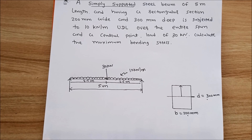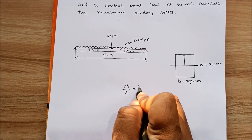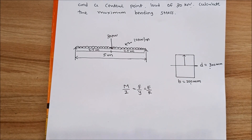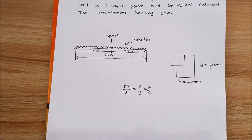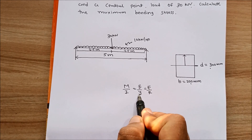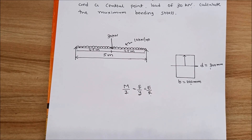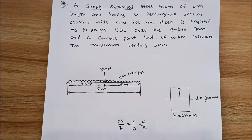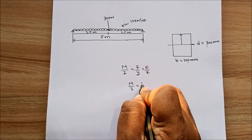The equation of pure bending is M/I = F/Y = E/R, where M is the maximum bending moment, I is the moment of inertia, F is the maximum bending stress, Y is the distance of the extreme fiber from the neutral axis, E is the modulus of elasticity, and R is the radius of curvature. Since no radius of curvature or modulus of elasticity is given, we use M/I = F/Y.